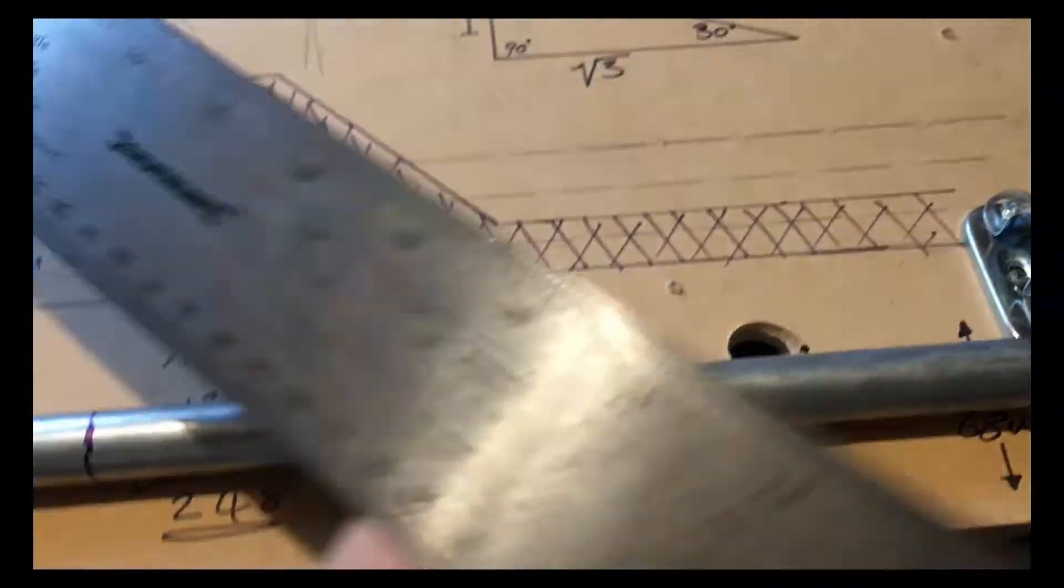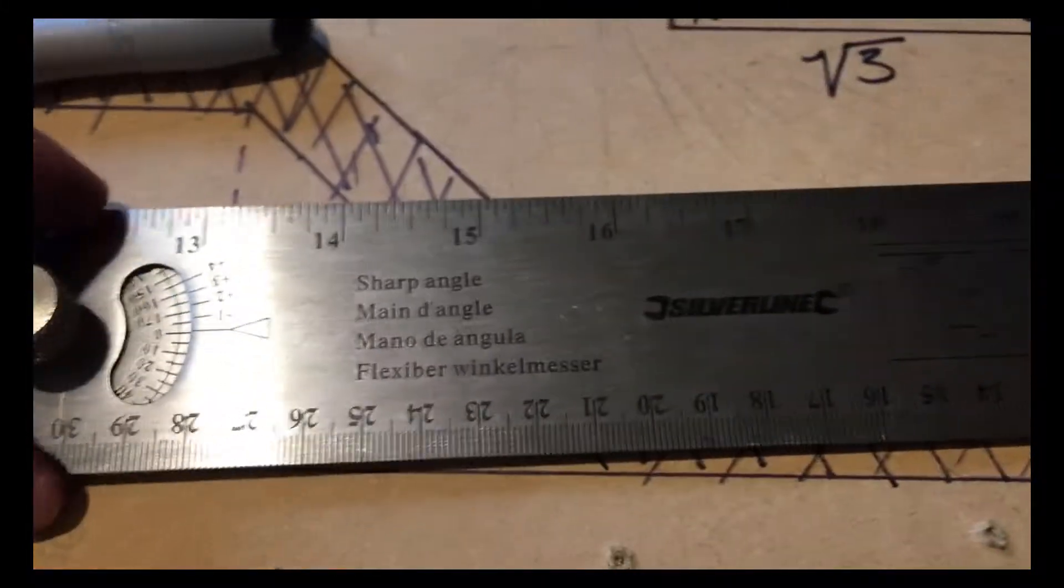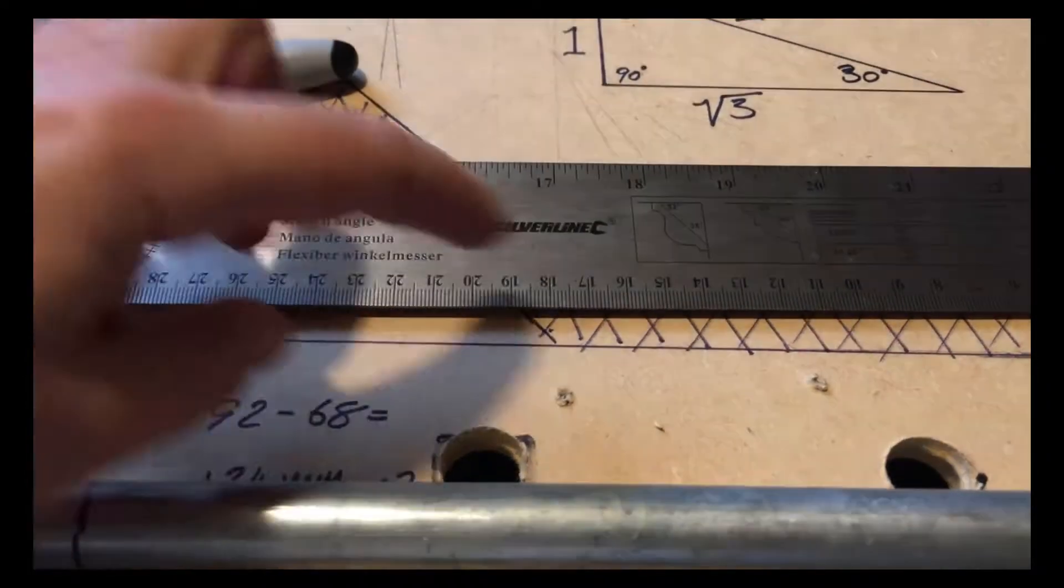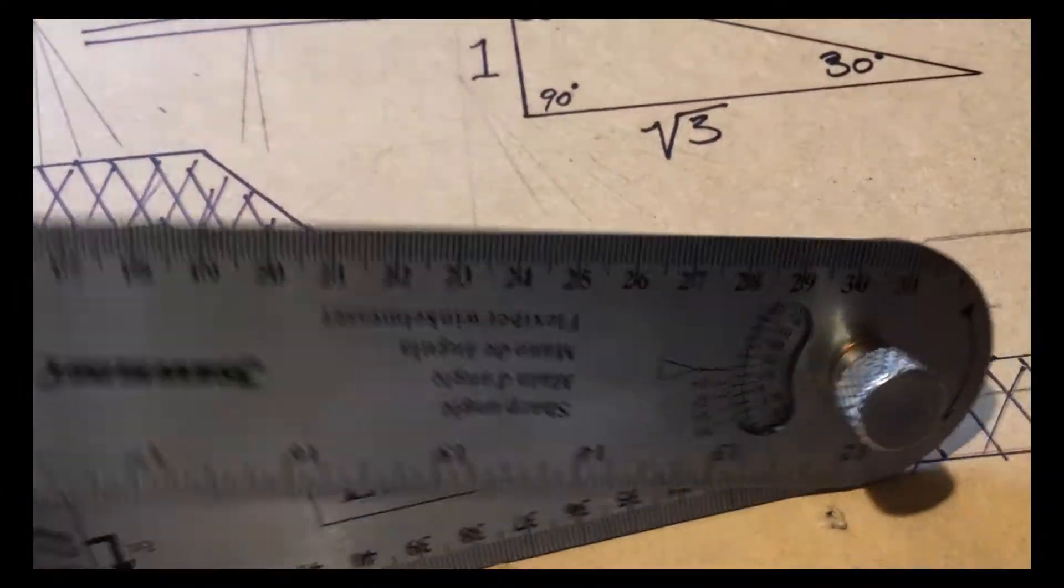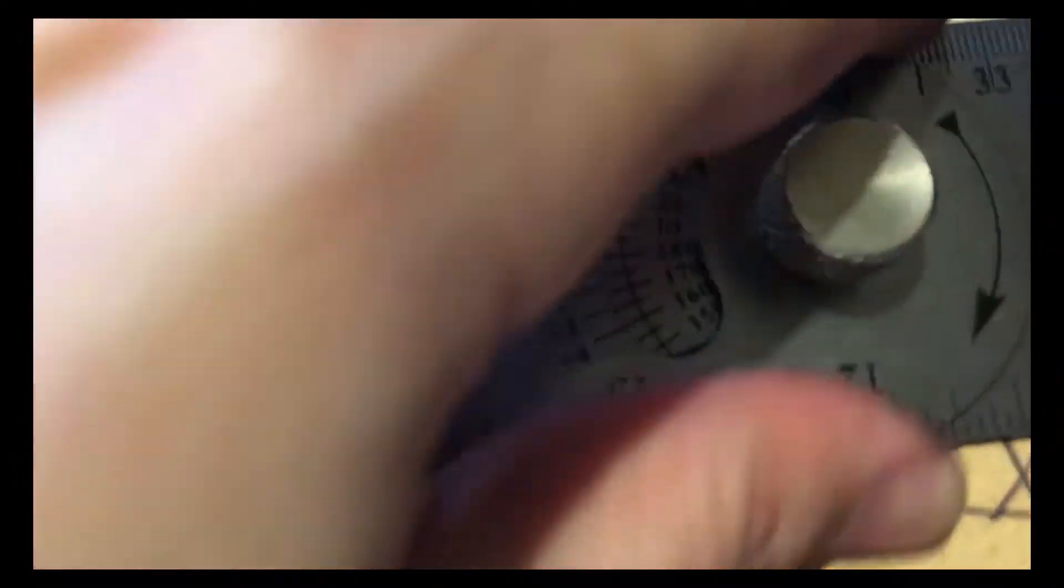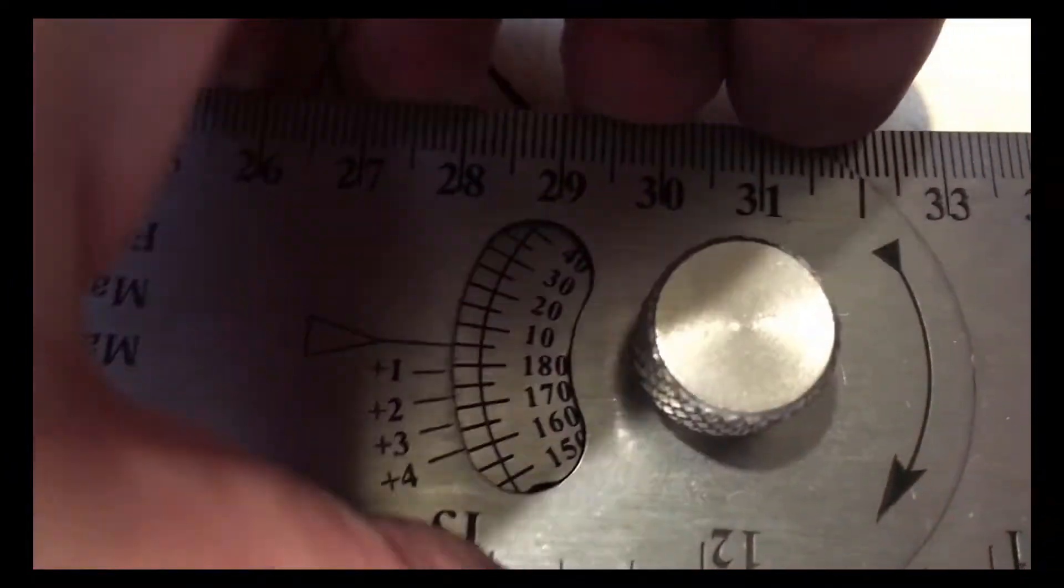I'm going to be using this ruler which is 60 centimeters in total length, 30 centimeters when it's closed. What you do is open up a small window here - we can set this triangle to 30 degrees.